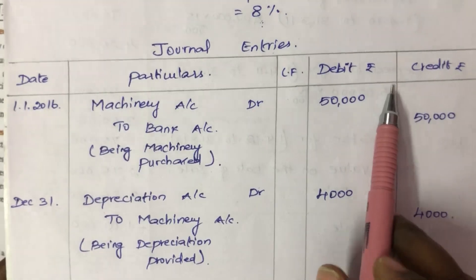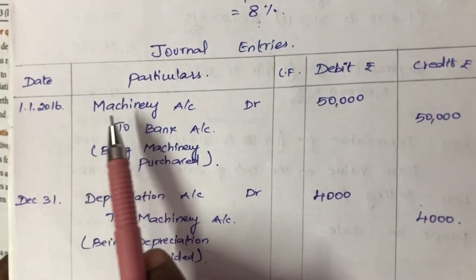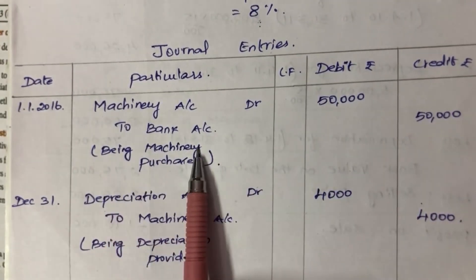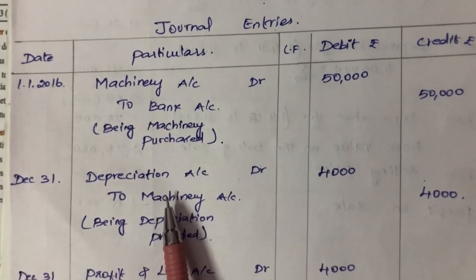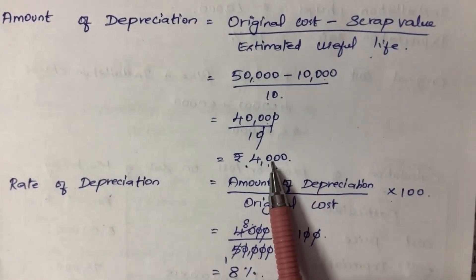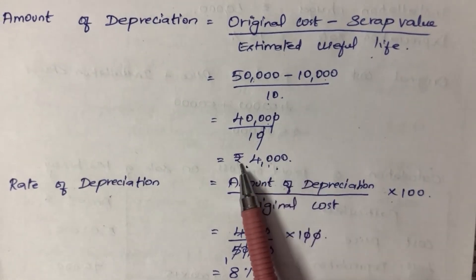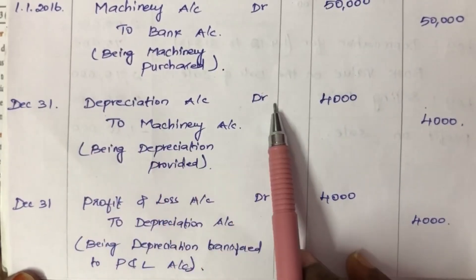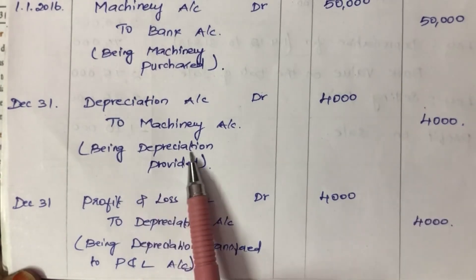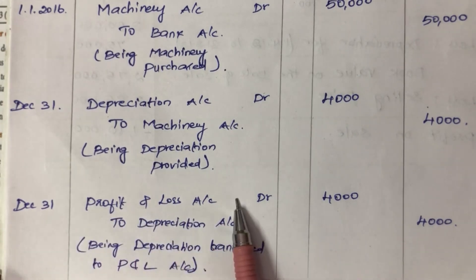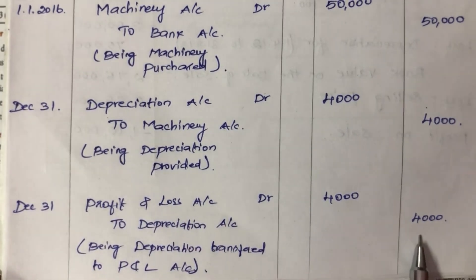Next, the journal entries. On the date 1-1-2016, the entry for purchase of machinery is 50,000 rupees. Then the depreciation entry: on December 31st, depreciation account is debited with 4,000 rupees and machinery account credited, being depreciation provided. Then depreciation is transferred: profit and loss account is debited with 4,000 rupees, being depreciation transferred to profit and loss account. These 2 entries are repeated for the same amounts in both years under the Straight Line Method.